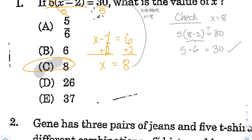Just to summarize for question number 1: to solve for x, you have to use inverse operations. What you do to one side, you've got to do to the other side, and you'll have x isolated on one side for the answer of C.